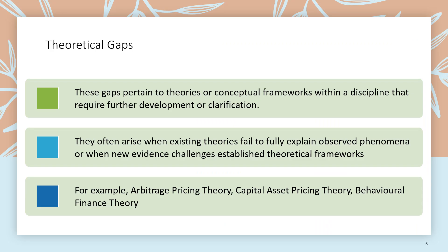Let's start with theoretical gaps. These types of gaps pertain to theories or a conceptual framework within a topic or area of discipline that requires further development or clarification. This might occur where existing theories fail to fully explain observed phenomena, or where new evidence challenges the established theoretical framework. For example, in the determinants of stock market returns, we have the arbitrage pricing theory, the capital asset pricing model, and the behavioural finance theory — these theories were established as a result of the limitations of previous theories.